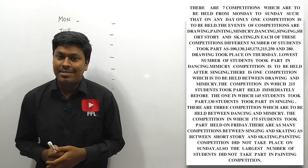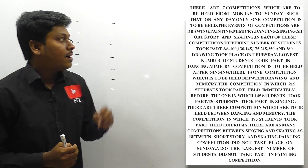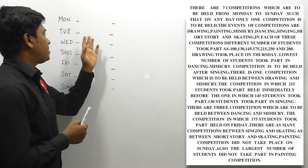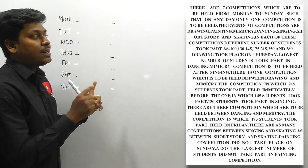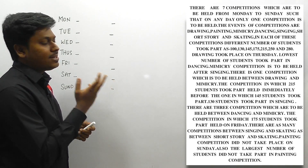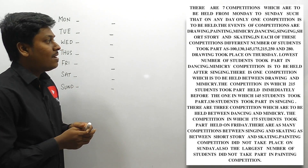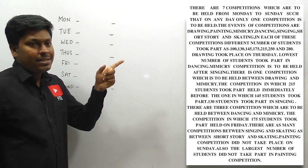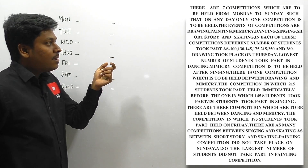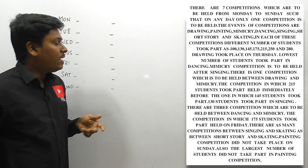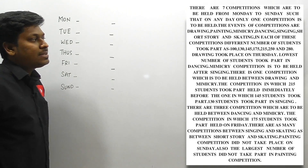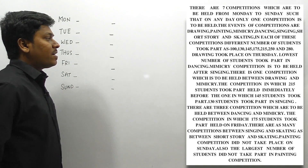Let me move on to interesting arrangement number 20. There are seven competitions to be held starting from Monday to Sunday — drawing, painting, mimicry, and others, totaling seven different competitions. The number of students participating ranges from a lowest of 100 to a highest of 280. Our target is to find on which day each competition is held and how many students participated.